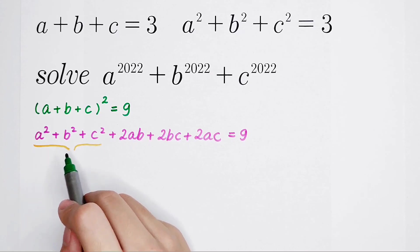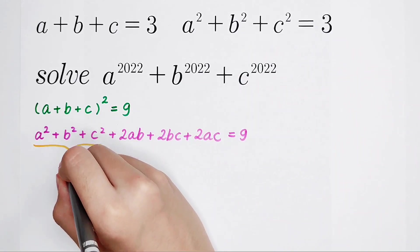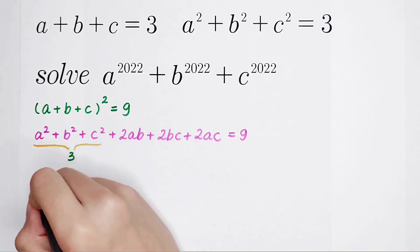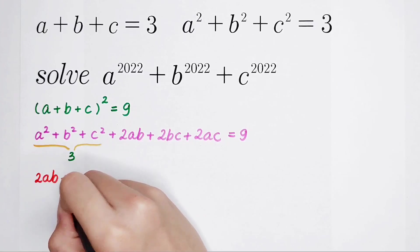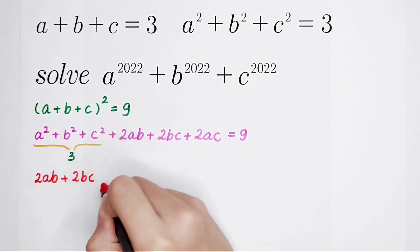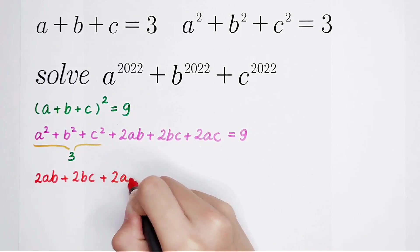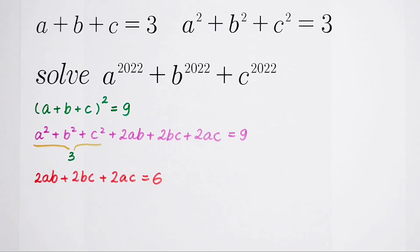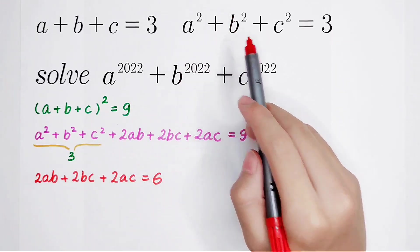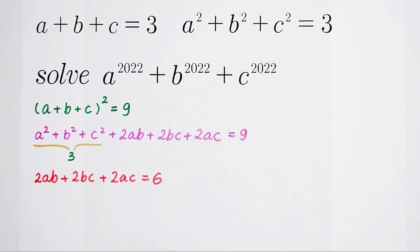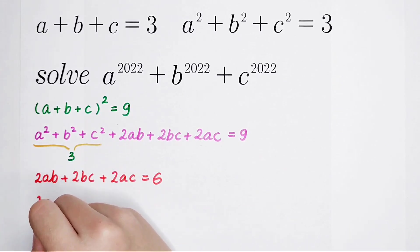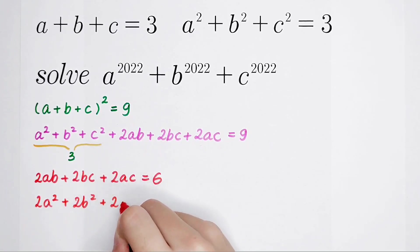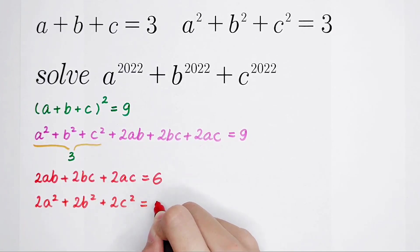Because A squared plus B squared plus C squared is 3 — we know it — so this part is 3. Therefore, 2AB plus 2BC plus 2AC equals 9 minus 3, which is 6. Then I multiply the equation A squared plus B squared plus C squared equal to 3 by 2 on both sides, giving 2A squared plus 2B squared plus 2C squared equal to 6.